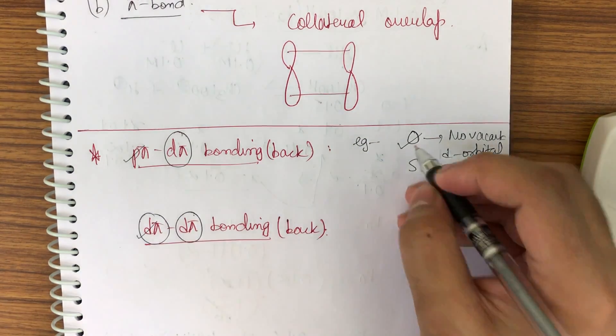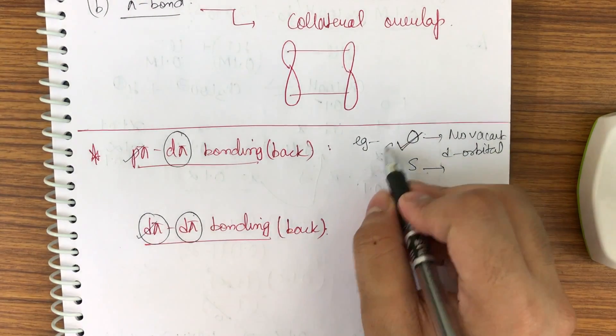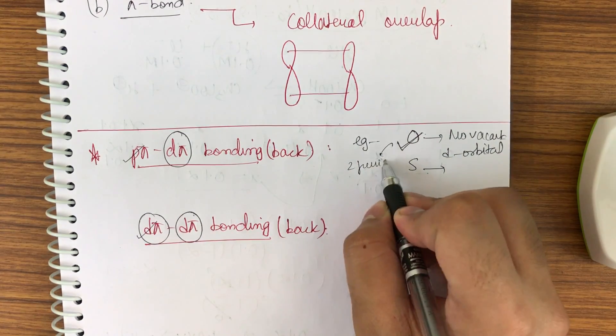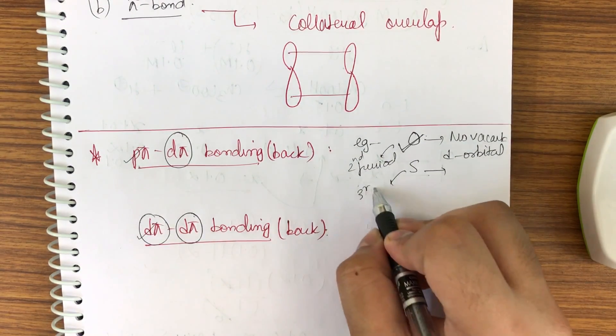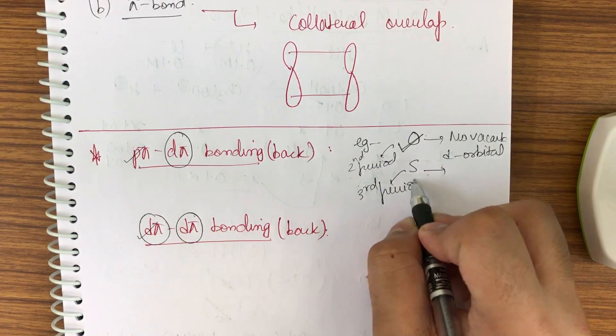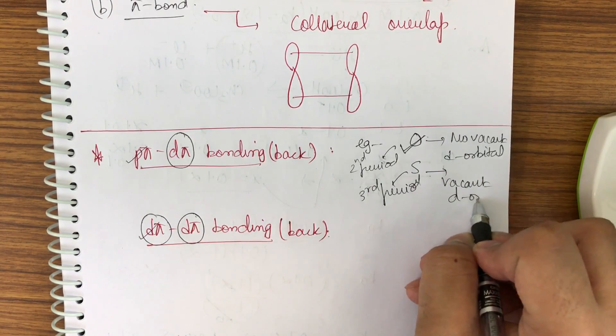The simplest example I would take will be of oxygen. See, it has no vacant d orbital as it is in the second period, so it has no vacant d orbital. But sulfur is in the third period, so it has got vacant d orbitals.